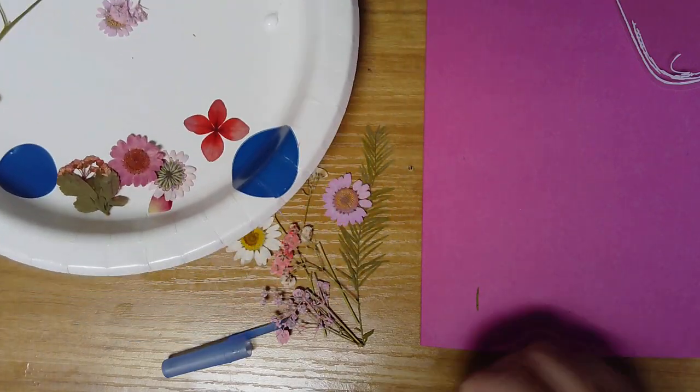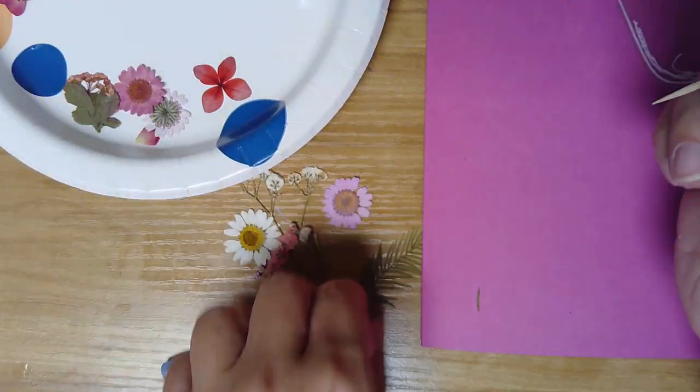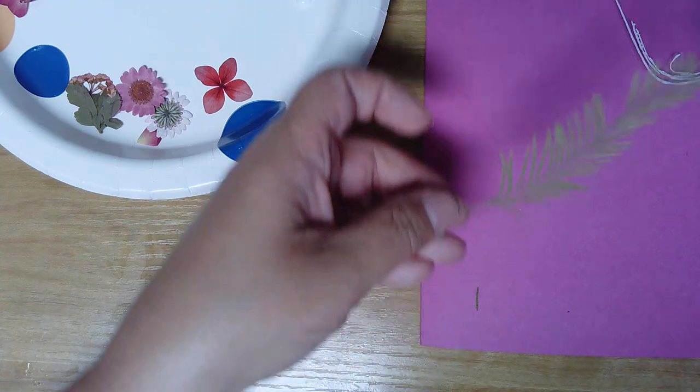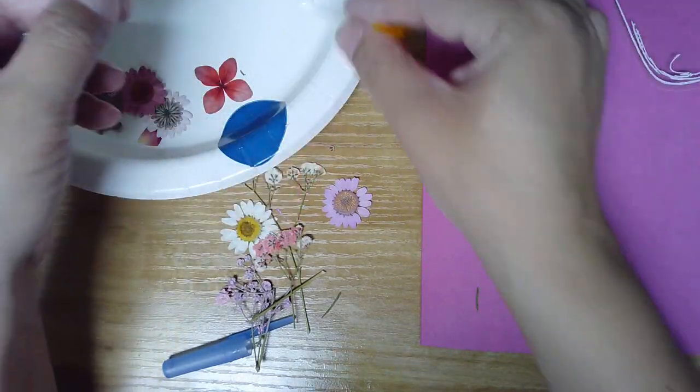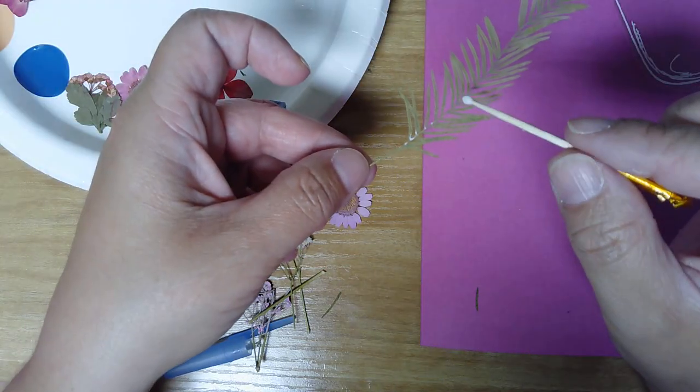So when you're gluing your flowers on, you're going to use your toothpick and just apply glue to the back of whatever you are going to be adding to your card.